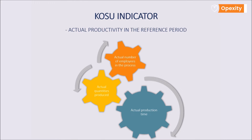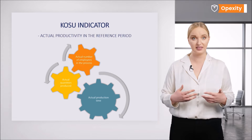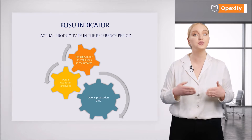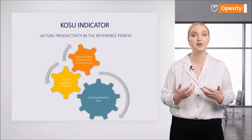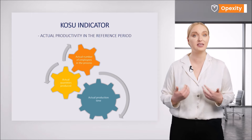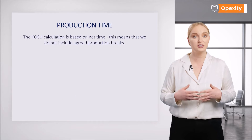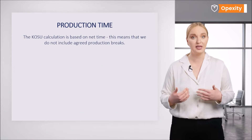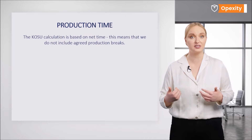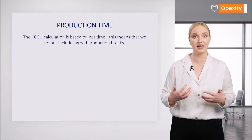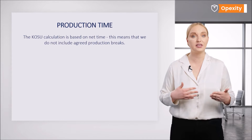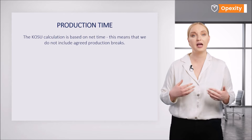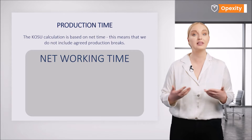Why is it relative to actual productivity? It stems from the fact that it is based on actual efficiency — for example, the actual quantity of production output in a certain unit of time, usually expressed in an hour. The production time used to calculate Kosu is net time less certain standard production events during which production is not performed. These events are related to the organization of the plant's production and result from regulations and labor laws.